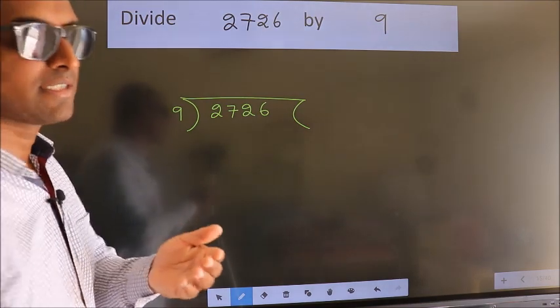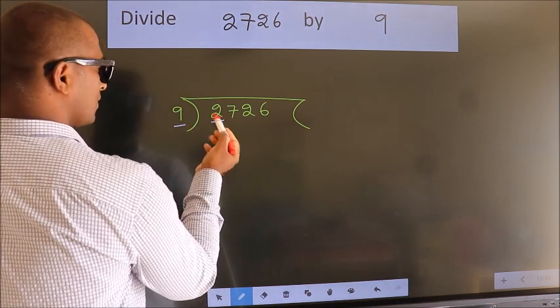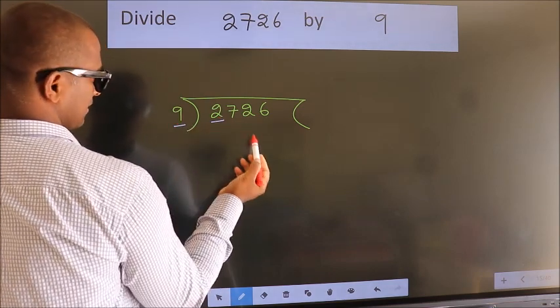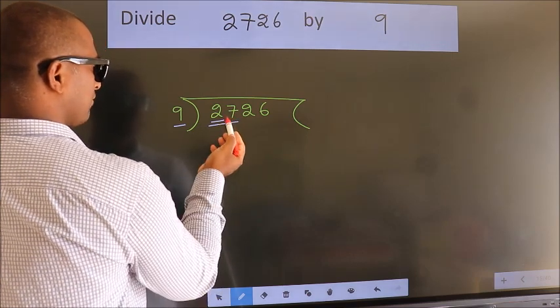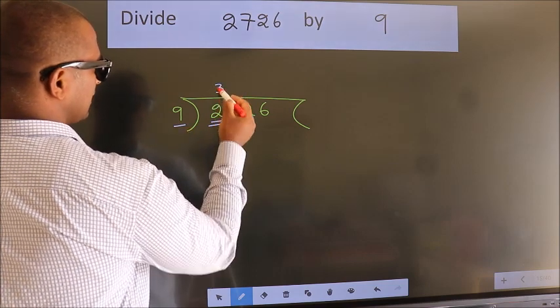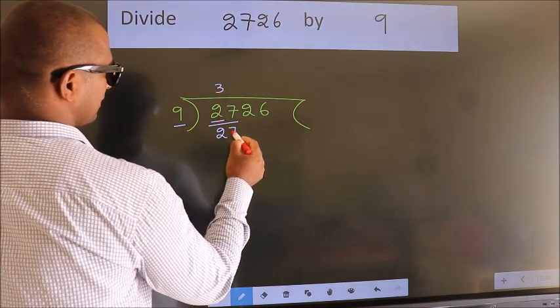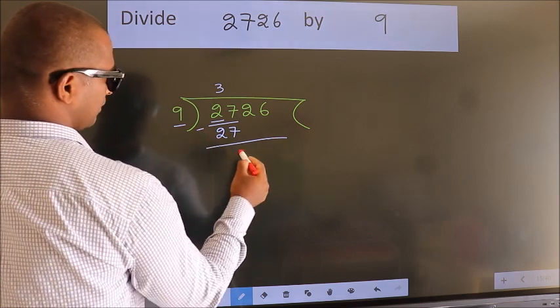Next. Here we have 2. Here 9. 2 smaller than 9. So we should take 2 numbers, 27. When do we get 27? In 9 table, 9 threes 27. Now we should subtract. We get 0.